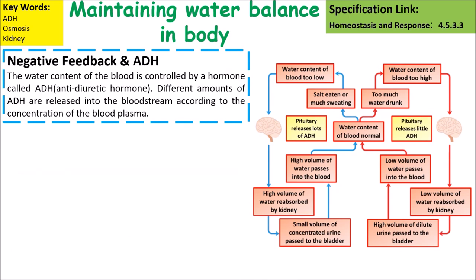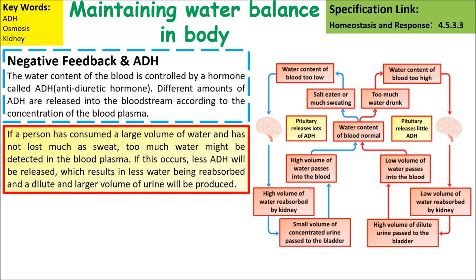The water content of the blood is controlled by a hormone called ADH, which stands for antidiuretic hormone. Different amounts of ADH are released into the bloodstream according to the concentration of blood plasma. If a person has consumed a large volume of water and has not lost much of it as sweat, too much water might be detected in the blood plasma. If this occurs, less ADH is released, resulting in less water being reabsorbed and a larger amount ending up in the urine.